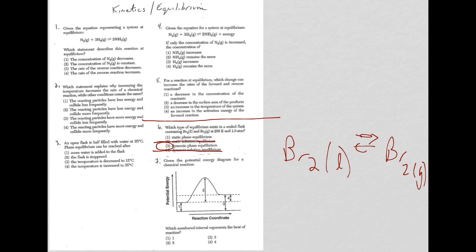If we look at question 7, we're dealing with a potential energy diagram here. And it's asked which number interval represents the heat of reaction. Well, heat of reaction is your change in what's called enthalpy. And that is given the symbol delta H. And it's the enthalpy of the products minus the enthalpy of the reactants.